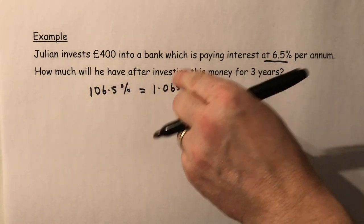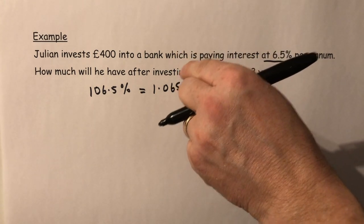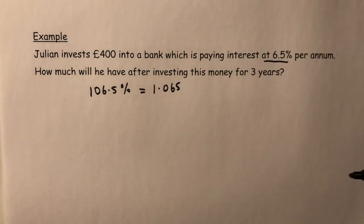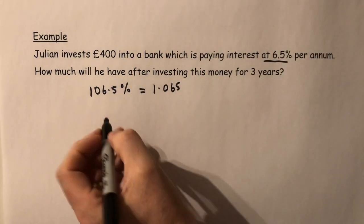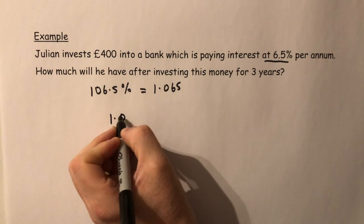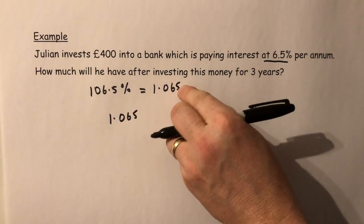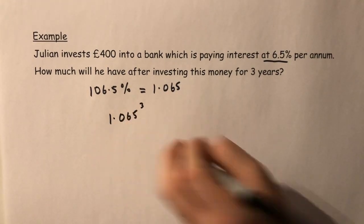Now I'll do that because at the end of the second year, I'd have to times that quantity by that number again. At the end of the third year, I'd have to times that quantity by that again. The easiest way to do this though is I would raise that quantity to the power of 3 for the three years.